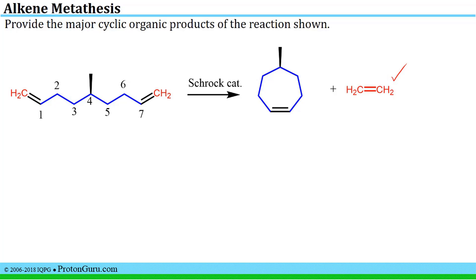Notice there's a wedge here, but this is not chiral to start with because it's symmetric about carbon number four — it's also symmetric here. So this is not a chiral center. This is just an achiral compound that happens to have a methyl group, and this would be the major product where this is the bond formed by the metathesis process.